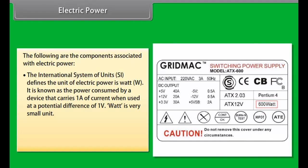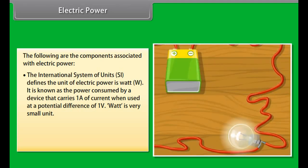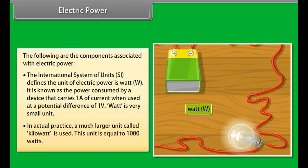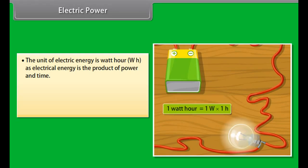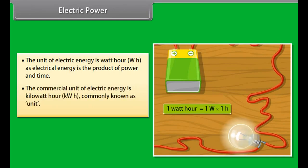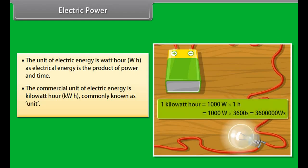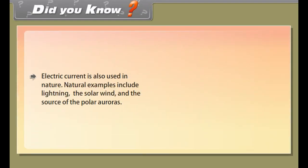Heating effect of electric current: This effect is caused when electric current is passed through a conductor, generating heat due to the resistance it offers to current flow. The work done in overcoming this resistance produces heat. The heat produced is directly proportional to the square of the electric current (I²), the resistance (R), and the time for which current passes. This is expressed as H = I²RT, known as Joule's Law.